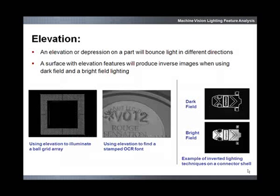Much like smooth and rough textures, an elevated feature will reflect light differently than a non-elevated feature. The two examples on the left demonstrate the contrast that is produced by an elevated surface feature. The example to the right demonstrates the inverse effects of bright field and dark field illumination on an elevated surface.